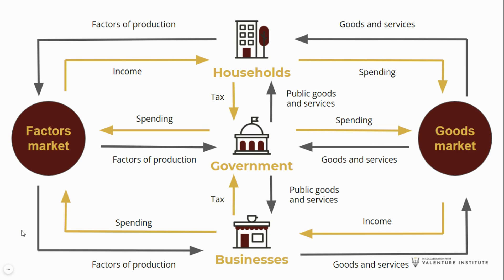Let's recap. Households provide factors of production to the factors market. The government and businesses will spend money in order to use these factors of production, and the money they spend becomes an income for the households. Businesses provide goods and services to the goods market. Households and the government will spend money to use these goods and services, and that money is income for the businesses. The government provides public goods and services to both households and businesses, and collects tax from them to be able to provide those public goods and services. We just explained in a very simple way economic activities between participants in a closed economy.